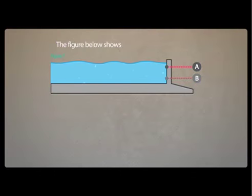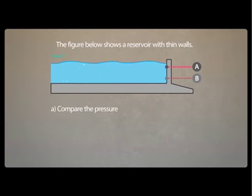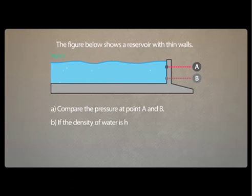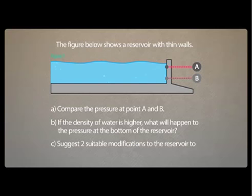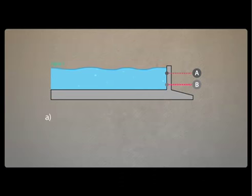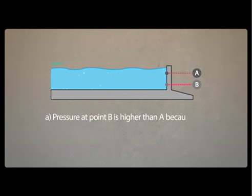Let's look at some popular questions. Figure 1 shows a reservoir with thin walls. Part A: Compare the pressure at point A and point B. The pressure at point B is higher than point A. This is because point B is deeper than point A.